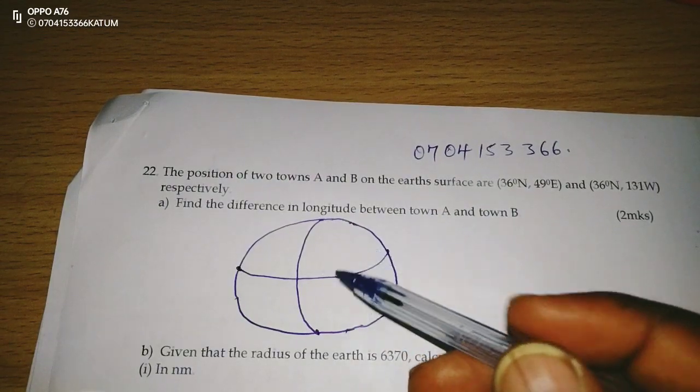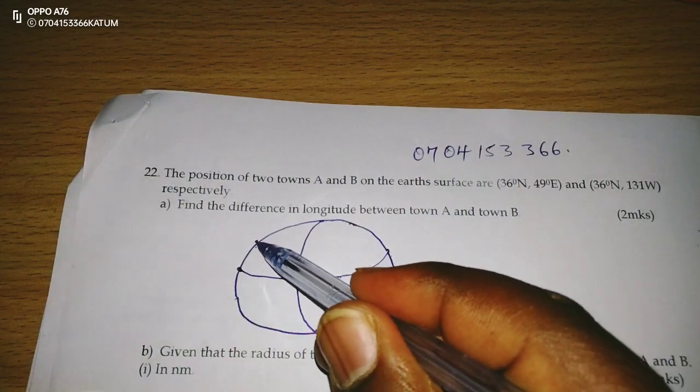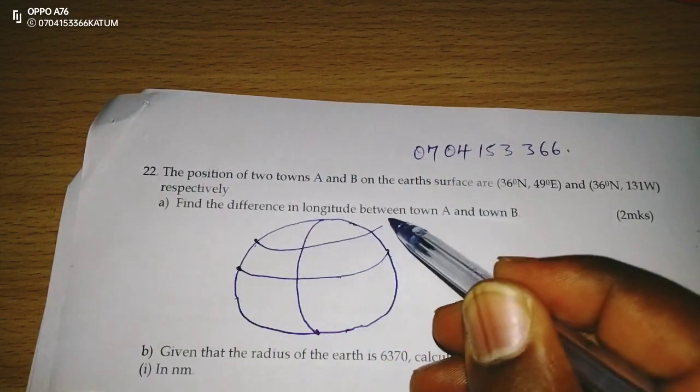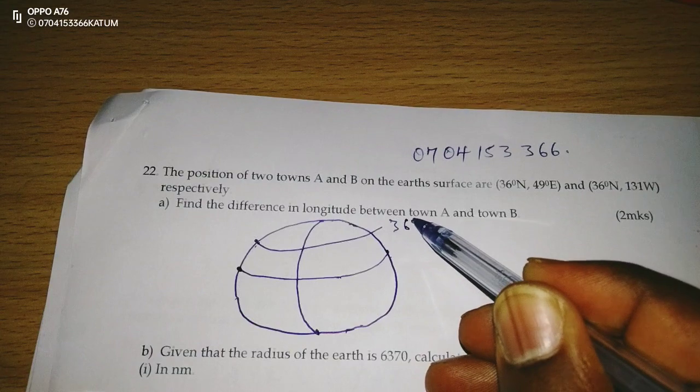On the northern hemisphere, we will have 36 degrees. This is 36 degrees in the north.